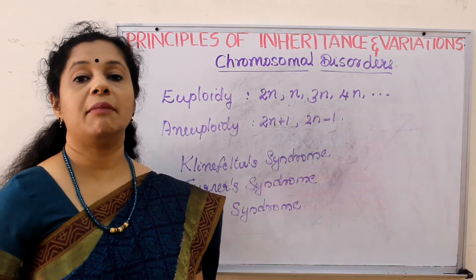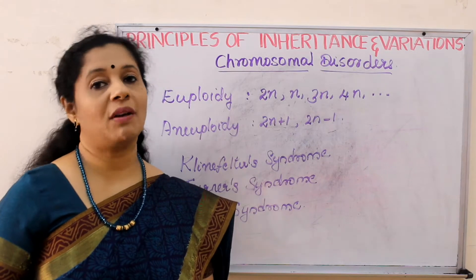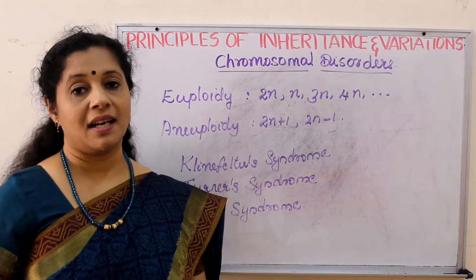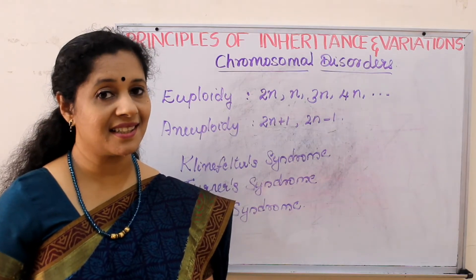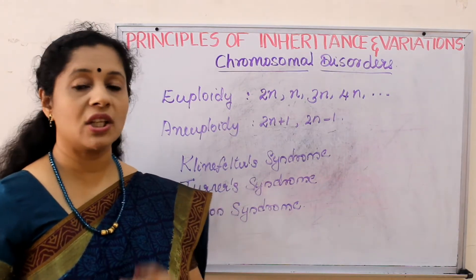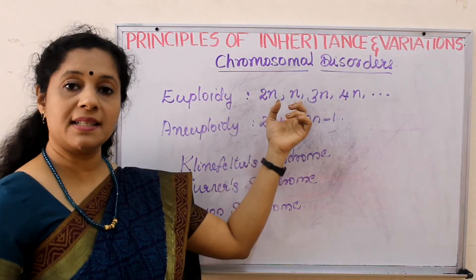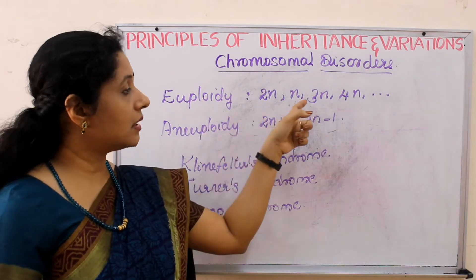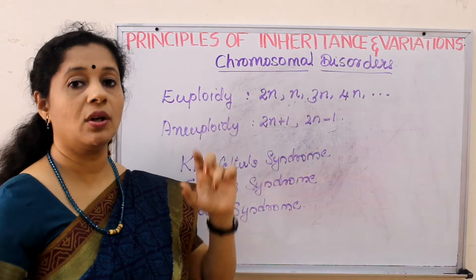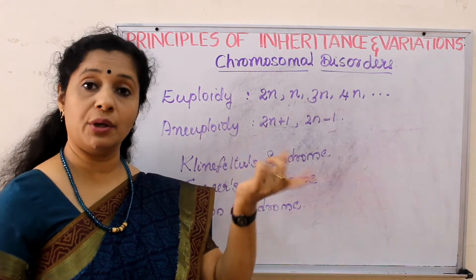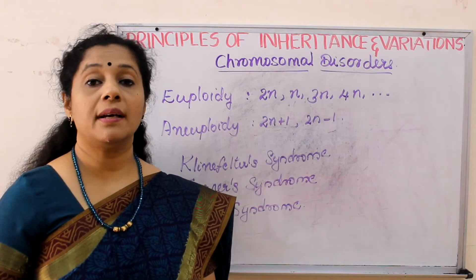We all have a diploid number of chromosomes — 23 pairs — that is our normal number. But if there is a variation, for example only one set, as found in our gametes, that is called a haploid condition — one set less than normal. Or if it is more, one set added, that is 3N, where N is the total number, so 3 into 23. Or 4N, 4 into 23. If it keeps increasing like that, it is called polyploidy — the whole set of chromosomes is duplicating. For example, commercial strawberries have 8N, octaploid, meaning 8 full sets of chromosomes.